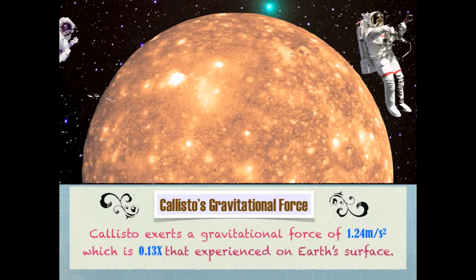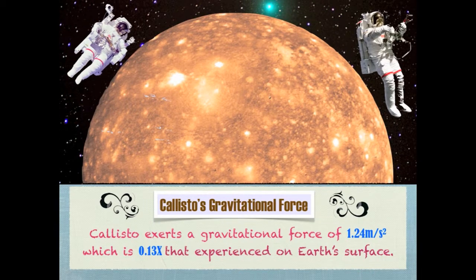Callisto exerts a gravitational force of 1.24 meters per second squared, which is 0.13 times that experienced on Earth's surface. So obviously, something that weighs a lot on Earth would weigh considerably less on Callisto.